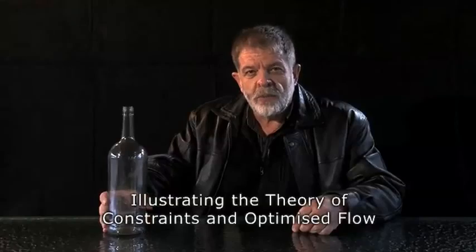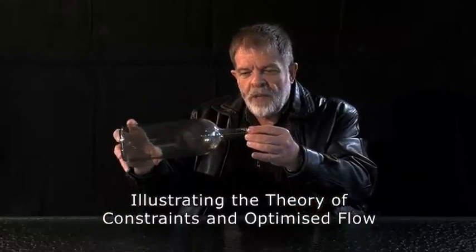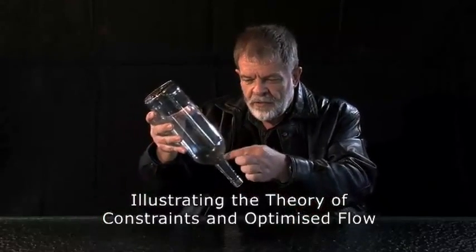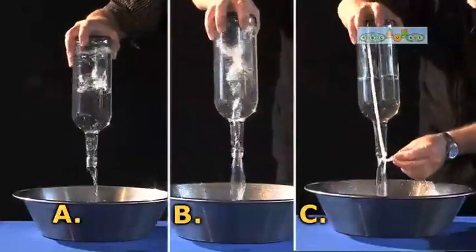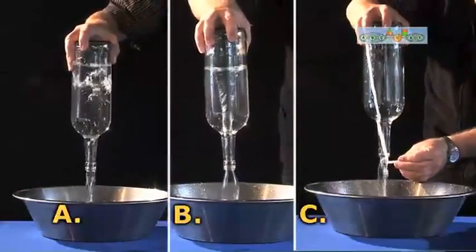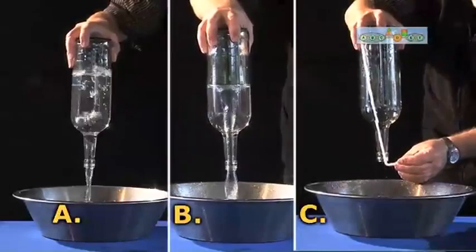A 1.5 liter bottle is filled with water and in order to empty the bottle, all the water has to flow through this bottleneck. The demonstration covers three scenarios using three identical bottles but with differences in the dynamics of the flow.